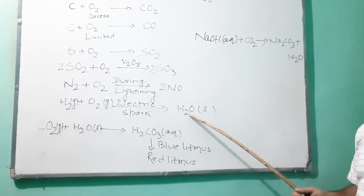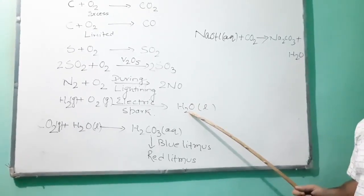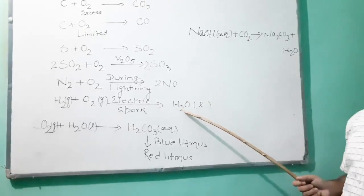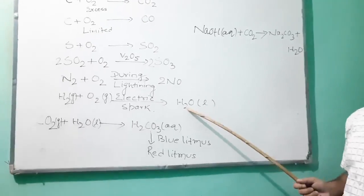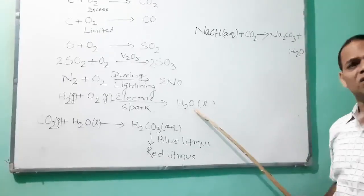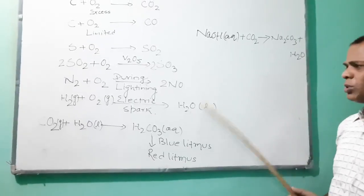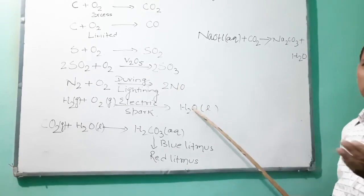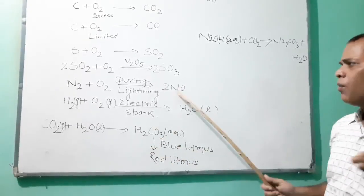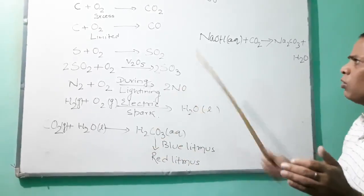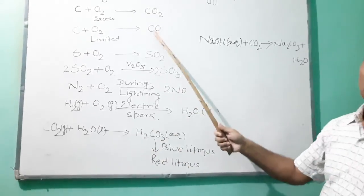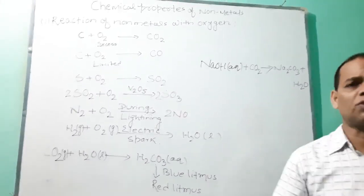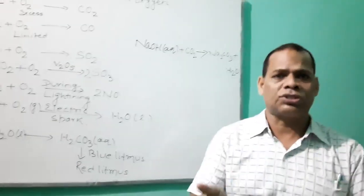Water — when pure water is passed through blue litmus, the color of blue litmus remains blue. So this shows that H₂O and CO are examples of neutral oxides.